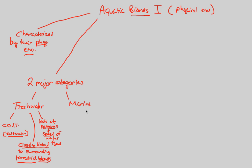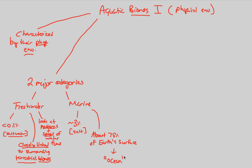In the marine biome, we classify anything as marine if we have about 3% concentration of salt. An important fact everyone knows is that about three-quarters, or 75%, of the entire Earth's surface is covered in a marine environment — technically a marine biome, which is what we commonly call ocean. As a budding ecologist, you can say 75% of the Earth's surface is covered in a marine biome.